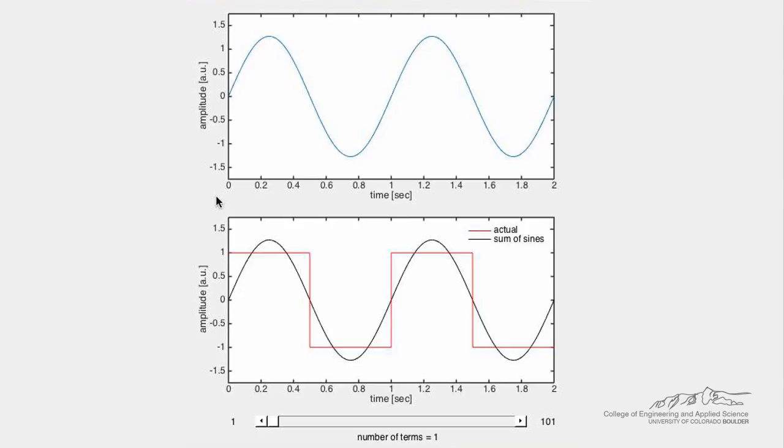This demo shows how a periodic square wave can be constructed from sine and cosine waves with specific amplitude and frequency using a Fourier series.